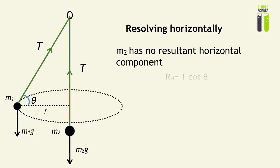Therefore, the only resultant horizontal component we must consider is that of M1. When we look at the force acting on M1, the resultant horizontal component equals T cos theta.